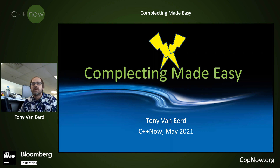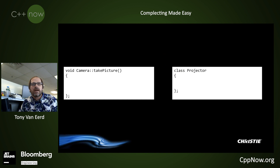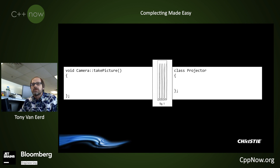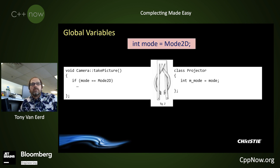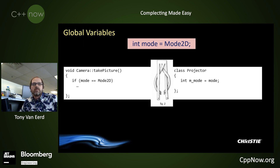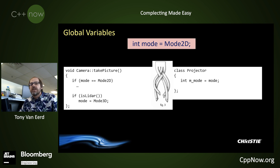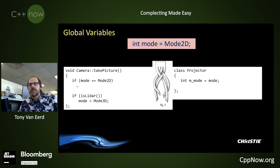But you know what's easy? Complecting. So I thought I'd do a lightning talk on 'Complecting Made Easy.' How can we complex some code? We have some code here — a camera class and a projector class. They're beautiful, separate classes with nothing in common. But start out simple: a global variable. That's the easiest way to complex these two classes together. They could both reference the same global variable; one could change it, the other reads it, so camera can now affect projector.